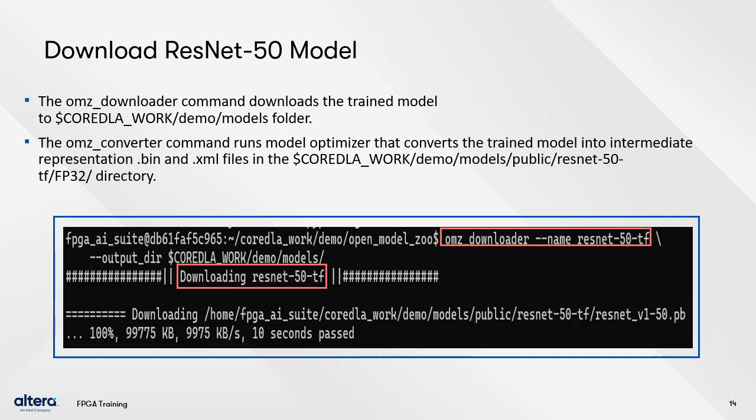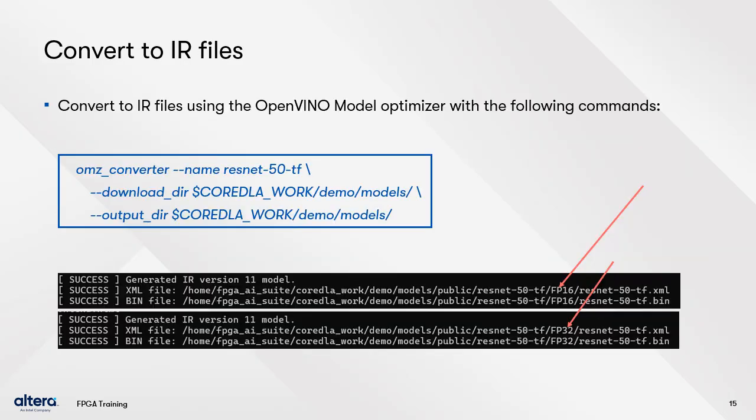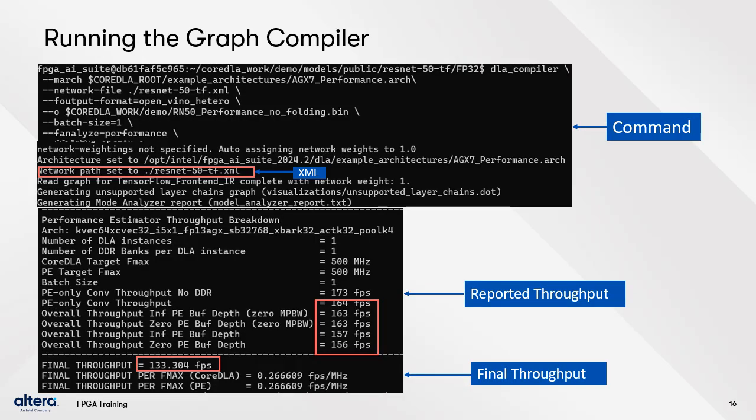The OMZ Downloader command downloads the ResNet 50 trained model. The OMZ Converter command runs Model Optimizer, which converts the trained model into intermediate representation .bin and .xml files. The FPGA AI Suite Compiler (DLA Compiler) tool can estimate the performance of a graph and IP architecture combination, and can also produce a compiled network that the runtime uses in AOT (ahead-of-time) mode to control inference on the IP.